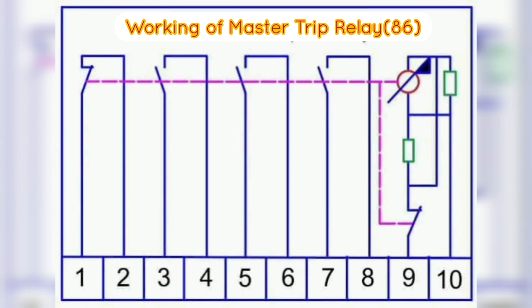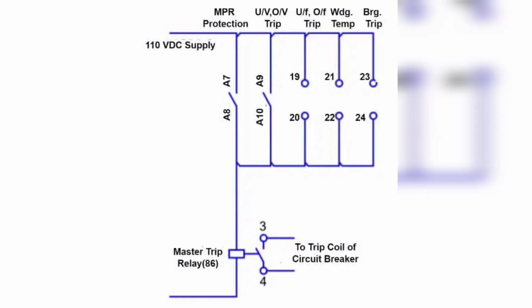Next we learn about the working of Master Trip Relay 86. The Master Trip Relay issues a single pulse trip command to a circuit breaker on receiving the trip signal from any of the protection relays connected to it. The block diagram of the relay is given. The Master Trip Relay issues a single command to the trip coil of a circuit breaker. The wiring diagram of the Master Trip Relay is shown in the diagram.